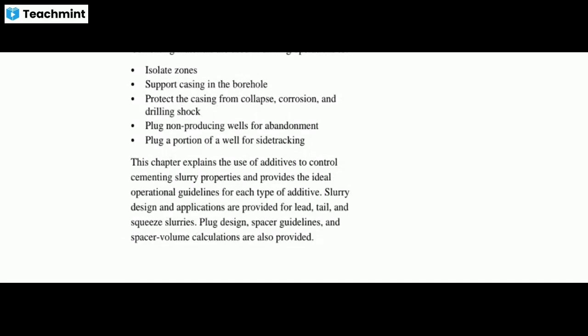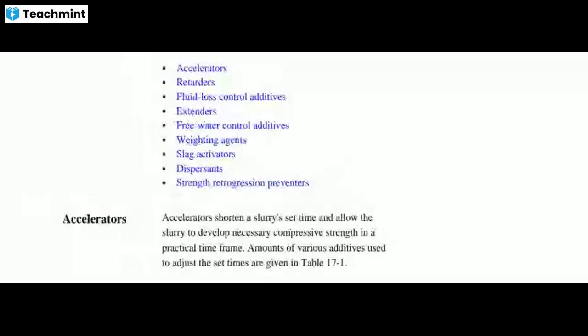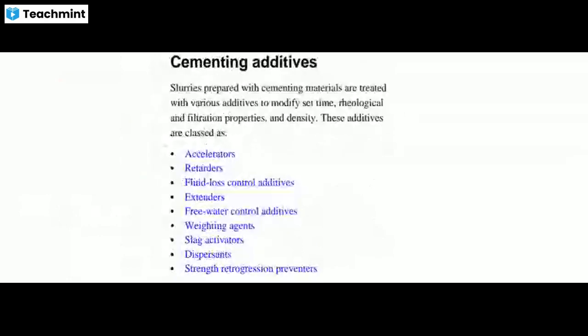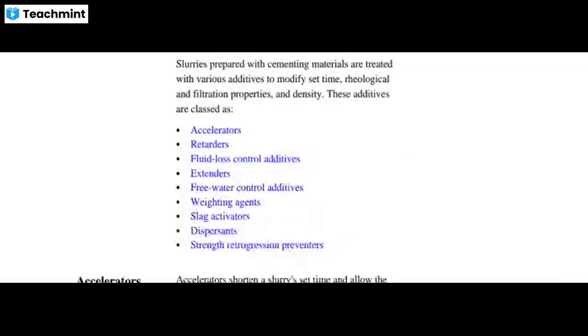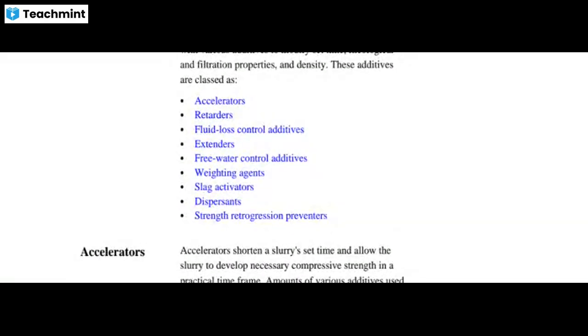We are also explaining some additives to control the cementing slurry properties for ideal operation guidelines, including plug designs and spacer guidelines. Slurries prepared with cementing materials are treated with various additives to modify set time, rheological and filtration properties, and density. The additives include accelerators, retarders, fluid loss control additives, extenders, free water control additives, weighing agents, slag activators, dispersants, and strength retrogression preventers.